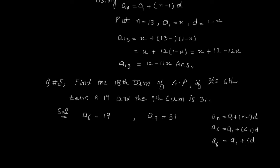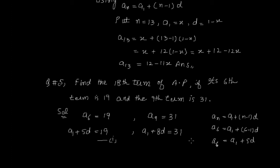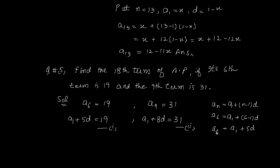AP की किसी भी position की term A1 और D में लिखनी हो तो A1 as it is आएगा और D का coefficient N से एक कम होगा। N=6 तो D का coefficient 5; N=9 तो D का coefficient 8। इस तरह: A6: A1 + 5D = 19 — equation (1); A9: A1 + 8D = 31 — equation (2)।